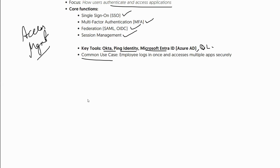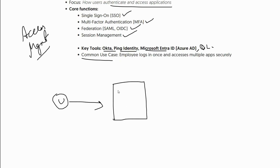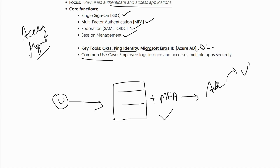The primary use case is: as a user who has been provisioned the right access, you try to log in. You're presented with a username and password screen, followed by MFA. Once that combination is completed, you are authenticated and have the right level of access. On the backend, various protocols like SAML, OAuth, and OpenID Connect are working. We'll discuss those in future sessions.